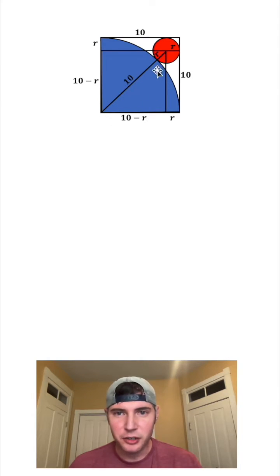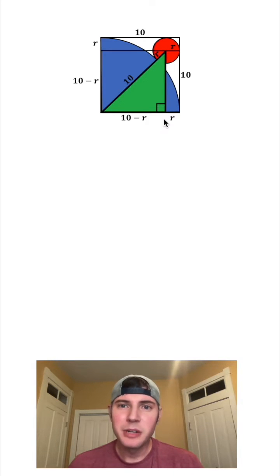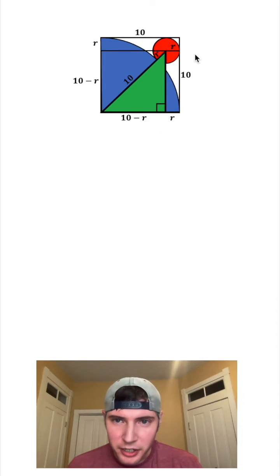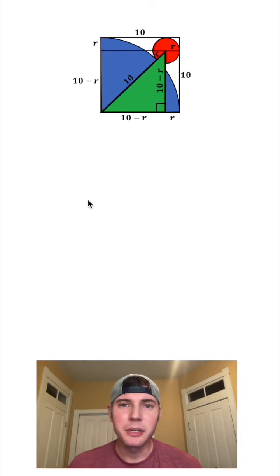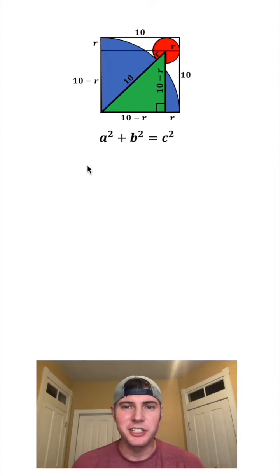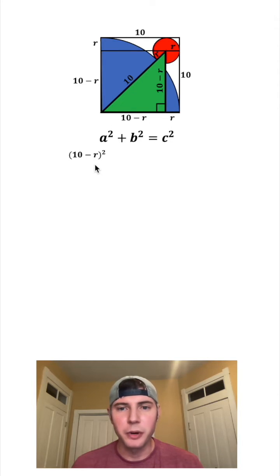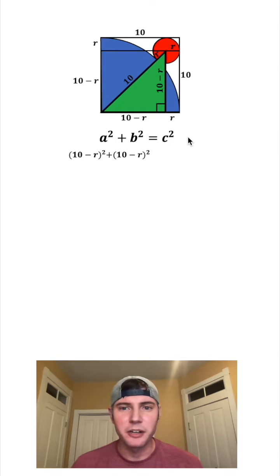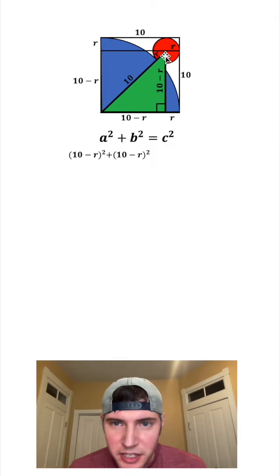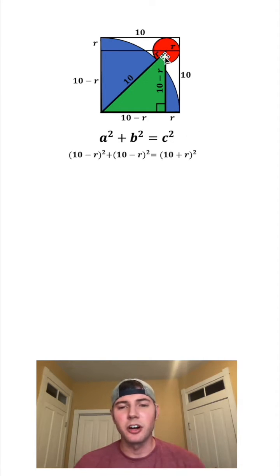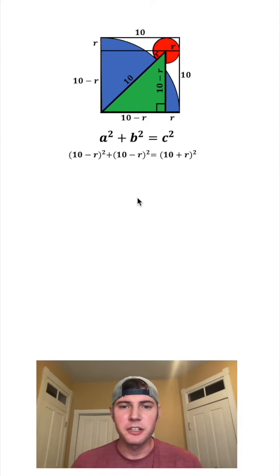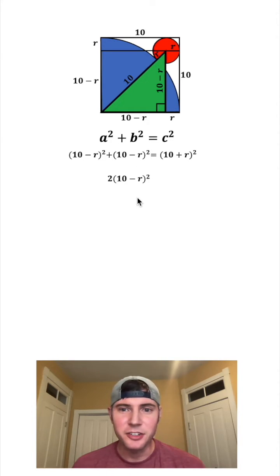Let's focus on this triangle right here — we'll color it green. This is going to be a right triangle, and the height of this right triangle will also be 10 minus R. Since it's a right triangle, we can do A² + B² = C². A can be this bottom one, which would be (10 minus R)². B can be this height, which would also be (10 minus R)². And C goes all the way across, so it's going to be (10 plus R)².